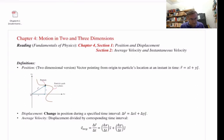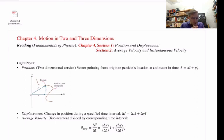This lecture focuses specifically on Chapter 4 Section 1 — position and displacement — and Chapter 4 Section 2 — average velocity and instantaneous velocity. If you want more content, you can read those specific sections in Chapter 4 on Wiley Plus. I'm giving you a summary and my own emphasis of the important ideas from those two sections.